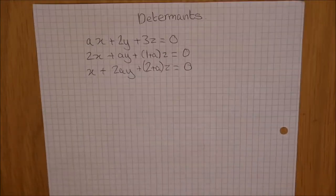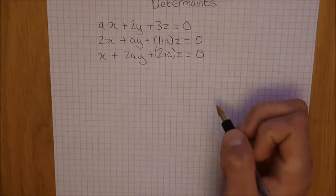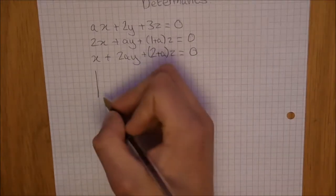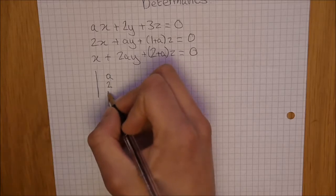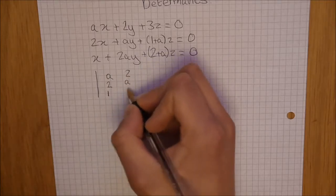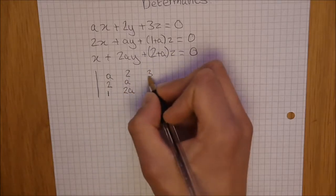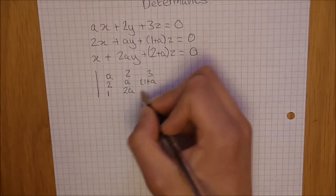Now, if we simply just took the coefficients of x, y, and z and wrote it in a matrix. So, a, 2, 1, 2, a, 2a, 3, 1 plus a, 2 plus a.